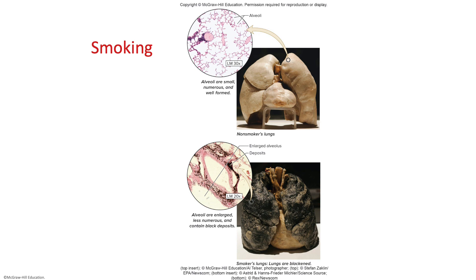Before we end, a note on smoking: smoking changes the lining of your trachea so you're not able to trap harmful substances, and they blacken up your lungs. Please try to stop smoking. Finally, the pleura — the parietal pleura is the outermost layer of the lungs in contact with the body wall, and the visceral pleura is the layer in direct contact with the lungs themselves.